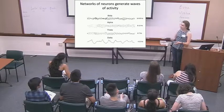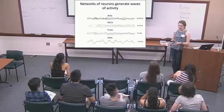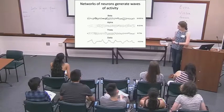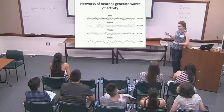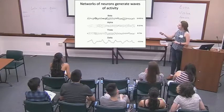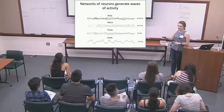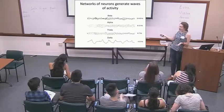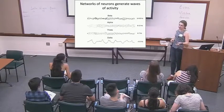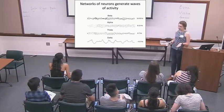An alpha wave is slower, occurring when neurons become more synchronized. The more synchronized the neurons are, the slower and bigger the waves are. You might see alpha waves when you're zoning out or meditating. As the wave gets bigger and neurons become more synchronized, you're getting sleepier. The biggest wave is the delta wave, which occurs during very deep, dreamless sleep.